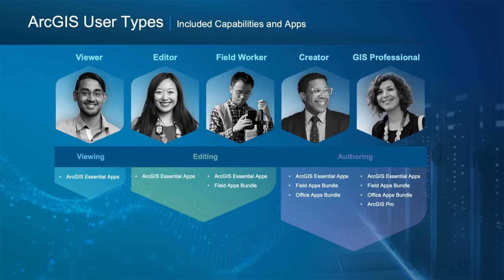Each user type also includes the apps needed for their work. As you can see in the diagram, everyone gets a set of essential apps. The Field Worker also gets a bundle of field apps. A Creator also gets the office bundle. And the GIS Professional gets all that plus ArcGIS Pro. Should you wish to add additional apps, that's also flexible, and you can match these to your organization's capabilities with any of the apps in ArcGIS.